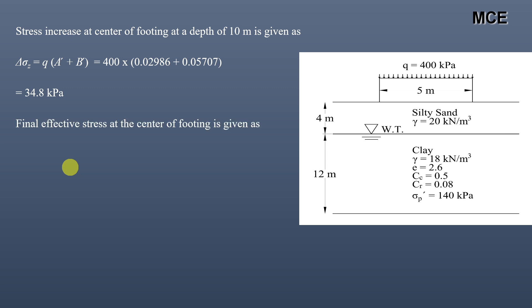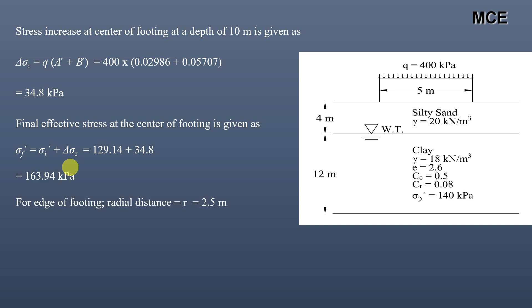The final effective stress at the center of the footing is the initial effective stress plus the stress increase: 129.14 + 34.8 = 163.94 kilo Pascal. Now, similarly for the edge of the footing, the radial distance r = 2.5 meters.